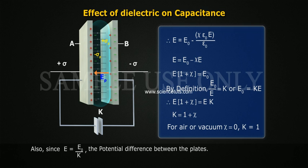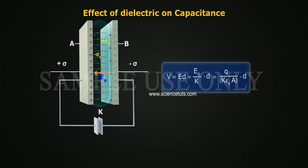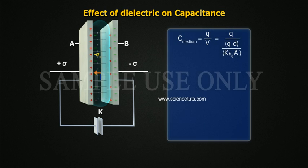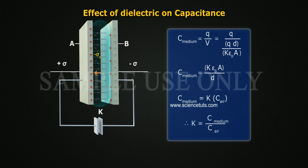Also, since E equals E naught by K, the potential difference between the plates is V equals ED equals E naught by K into D, which equals Q by K epsilon naught A into D. Thus, the capacitance of the capacitor is C medium equals Q by V, which equals K epsilon naught A by D, or C medium equals K of C air. Therefore, K equals C medium by C air.